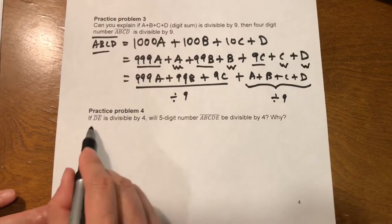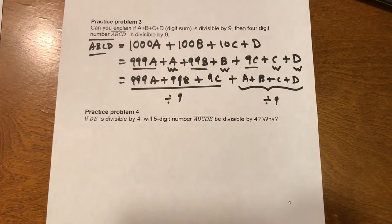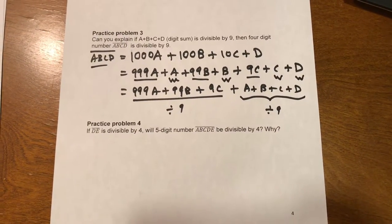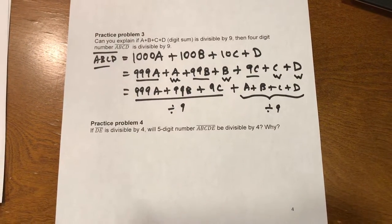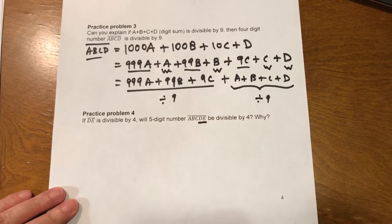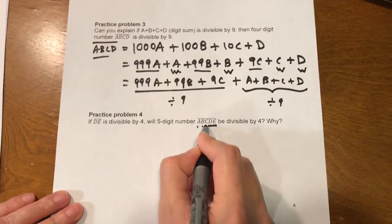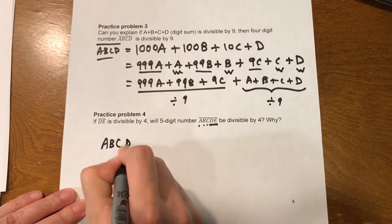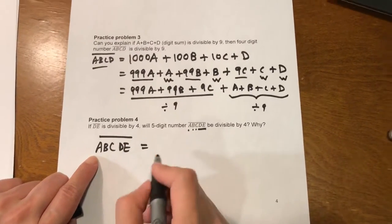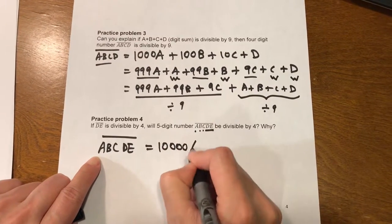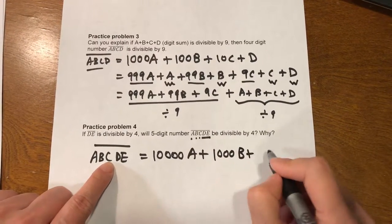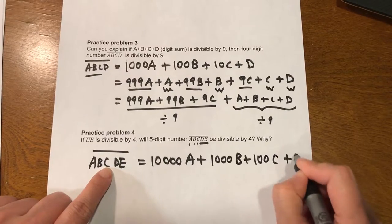Practice problem 4. If DE is divisible by 4, will 5-digit number ABCDE be divisible by 4? And why? So for this problem, we can do the same. This one can be divided by 4, and we can separate the first three terms. So ABCDE equals A represents the 10,000 place. So 10,000A, B represents the 1,000th place, and C is the 100th place, and then DE.